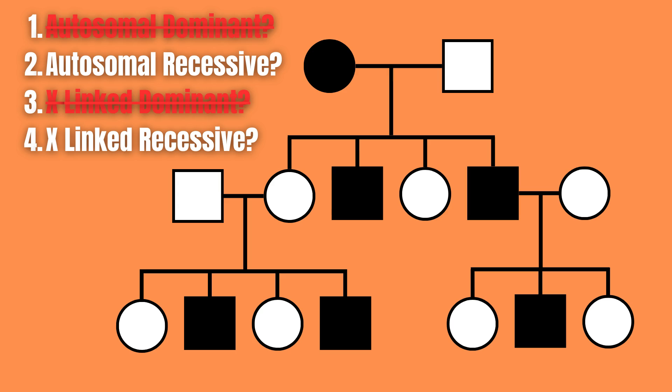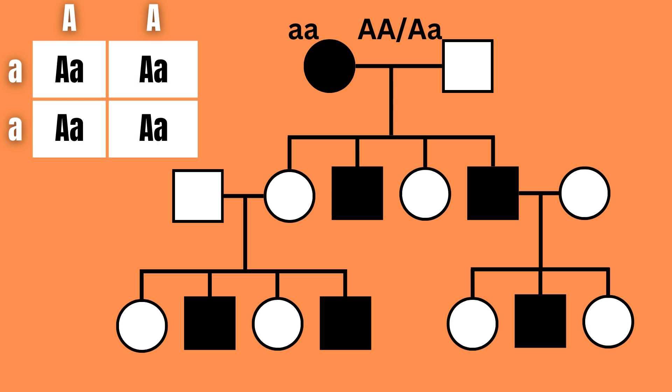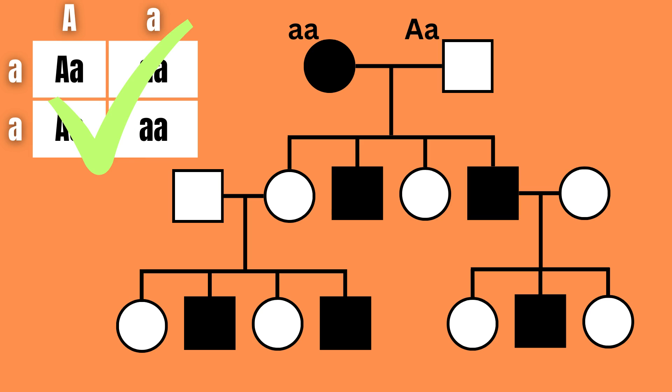Now the real fun begins. From now on we have to figure things out one Punnett square at a time. Let's start at the top and first assume that the trait is autosomal recessive. Therefore the mother must be recessive. If the father was homozygous dominant, meaning that both his alleles would be dominant, all the children would be dominant as well, which is not the case. Therefore he must be heterozygous, meaning that one allele is dominant and the other is recessive. Their children who do not express the trait will therefore also be heterozygous.